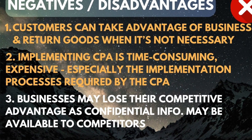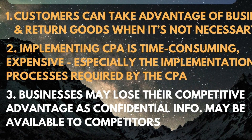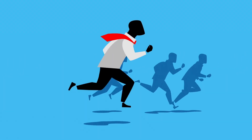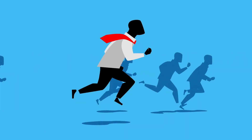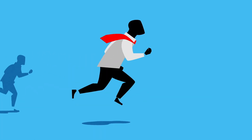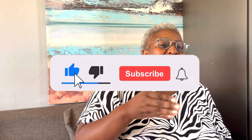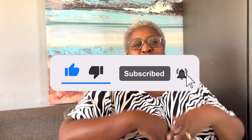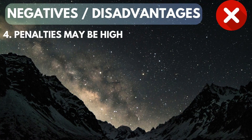The law forces companies to disclose certain information, so that information can become available to competitors. They have to disclose more information about their products, services, and processes. That is not good for the business — at times you want to hide certain information so that you stay ahead of your competitors, but the law forces the business to disclose all that information.